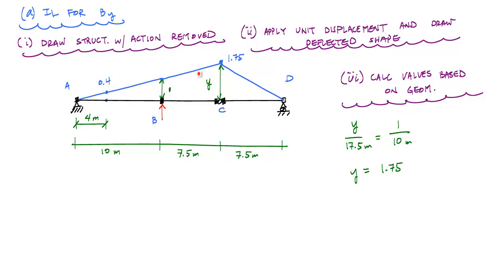And Mueller-Bresslaw says that this deflected shape is the influence line for the vertical reaction at B for a unit concentrated force traveling along the length of this beam.